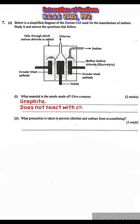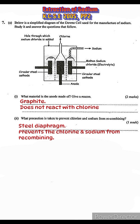Roman numeral two: what precaution is taken to prevent chlorine and sodium from recombining? At the anode, chlorine gas is discharged; at the cathode, sodium metal is formed. There needs to be a structure that separates the cathode from the anode to prevent the sodium and chlorine from recombining with one another. This is the steel diaphragm — a structure made of steel suspended between the cathode and the anode to prevent sodium and chlorine gas from recombining.